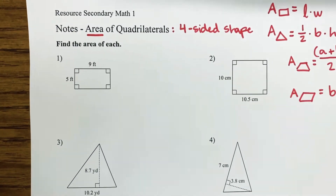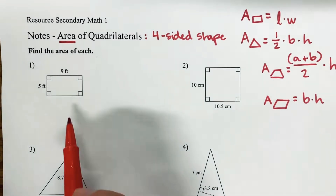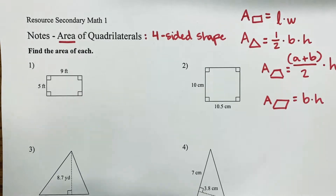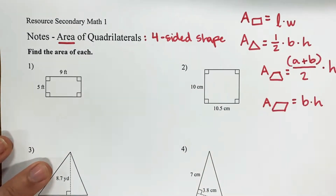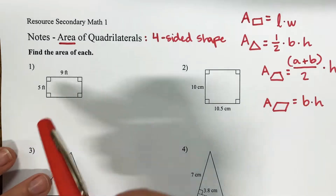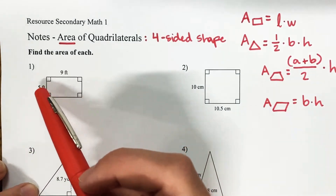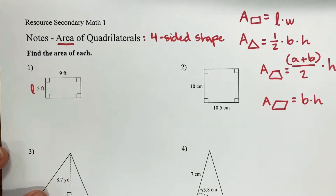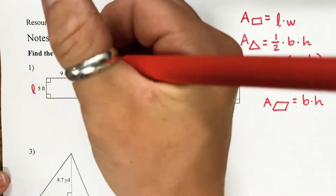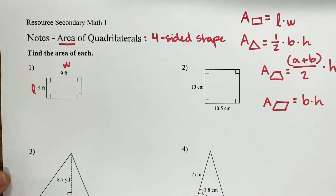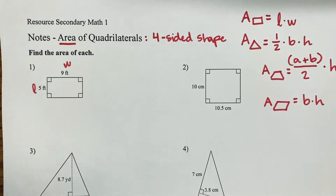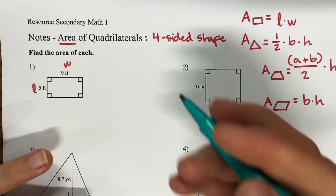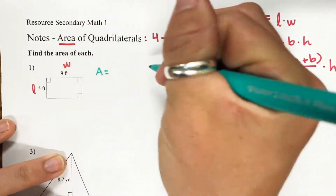Let's go ahead and look at number 1. We have a rectangle here, and we need to find the area of this rectangle. So we're going to use our rectangle formula, length times width. First I need to identify my length and my width. My length I'm going to label as 5, and my width is going to be 9. Now that I know my length and my width, I can go ahead and plug it into my area formula.